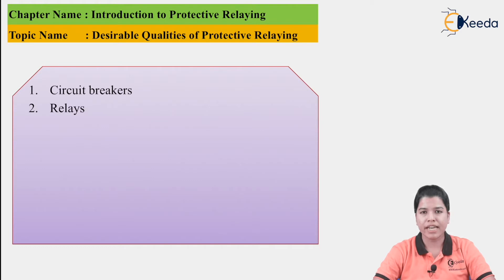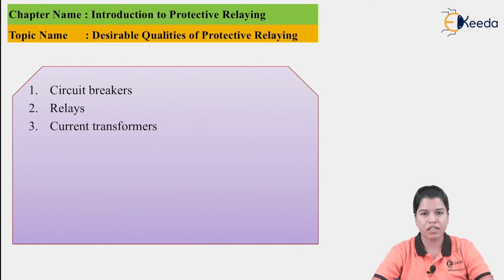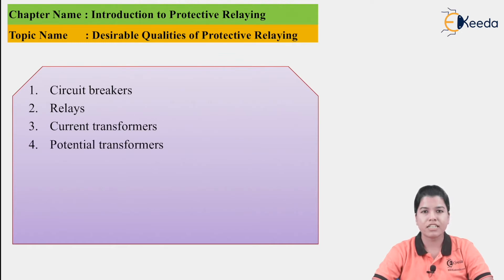Next is Relays. The relay is fed with a certain actuating quantity. If the current goes beyond that actuating quantity, the relay must send a trip signal to the circuit breaker and the contacts of the circuit breaker will open. Next are Current Transformers. Current transformers sense the current; the secondary winding is connected to the relay. Whatever current is sensed by the CT is sent to the relay, which detects whether the current is normal or abnormal and gives a signal to the circuit breaker.